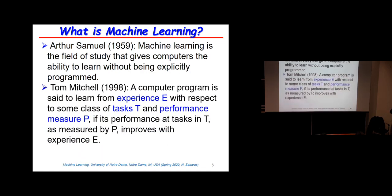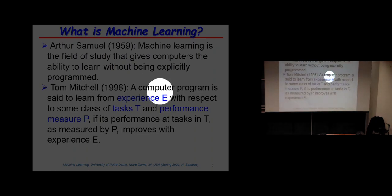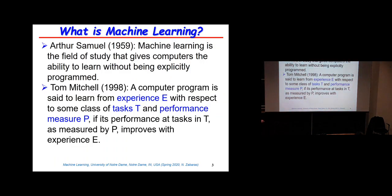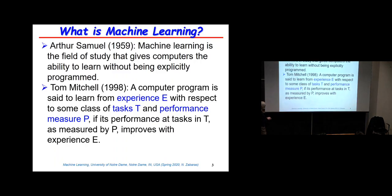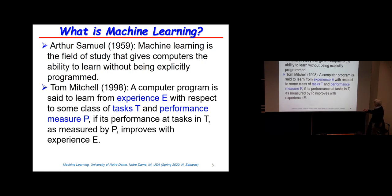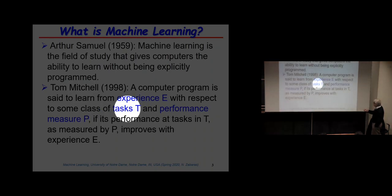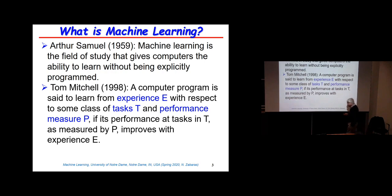When machine learning started, the first book by Tom Mitchell was written around 1998. He defined more formally what machine learning is: a computer program is said to learn from experience E, with respect to some class of tasks T and some performance measure P, if the performance of tasks in T as measured by P improves with experience E. Effectively, the more data you provide, the better the performance on some tasks gets. The more the data, the better it gets.